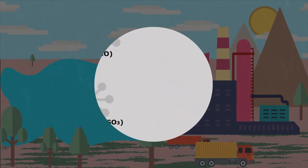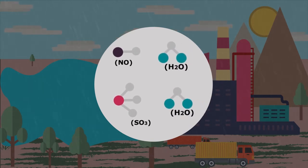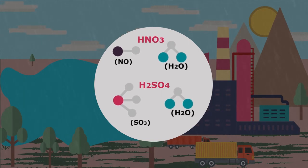When oxides of sulfur and nitrogen released from industries or by vehicles combine with water vapor, they form sulfuric acid and nitric acid.